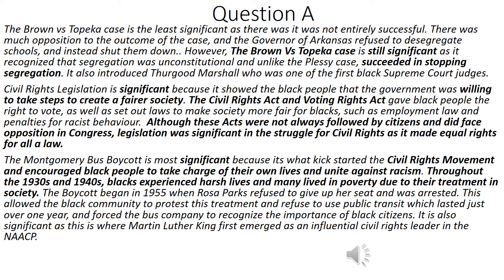The Montgomery Bus Boycott is the most significant because it kick-started the civil rights movement and encouraged Black people to take charge of their own lives and unite against racism. Throughout the 1930s and 1940s, Black Americans experienced harsh lives and many lived in poverty. The boycott began in 1955 when Rosa Parks refused to give up her seat and was arrested. This allowed the Black community to protest and refuse to use public transit for just over one year, forcing the bus company to recognise the importance of Black citizens. It is also significant as this is where Martin Luther King first emerged as an influential civil rights leader.